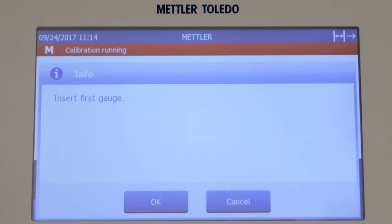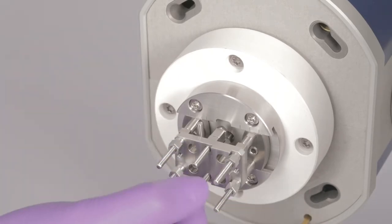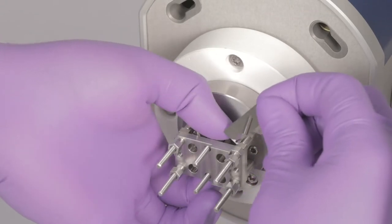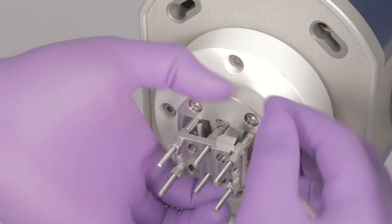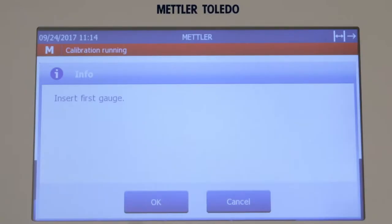The message Insert First Gauge appears. Remove the two nuts in the middle drive shaft clamp. Gently push the middle support pillars far enough to allow the gauge to fit in the gap and insert the 0.3 mm gauge underneath the alignment insert. Tap OK.